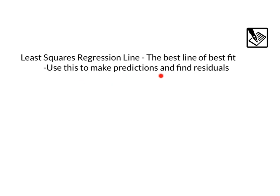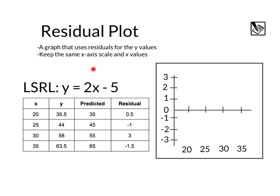A residual plot is a graph that uses residuals for the y values. It keeps the same x-axis scale and the x values. We know that residuals tell us the difference between what actually occurred and what's predicted, and a residual plot just helps us visualize how close or far or what patterns we see in those residuals.